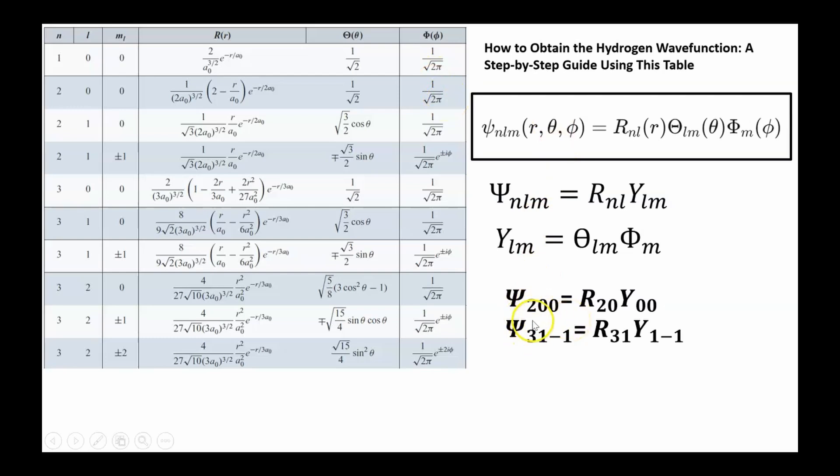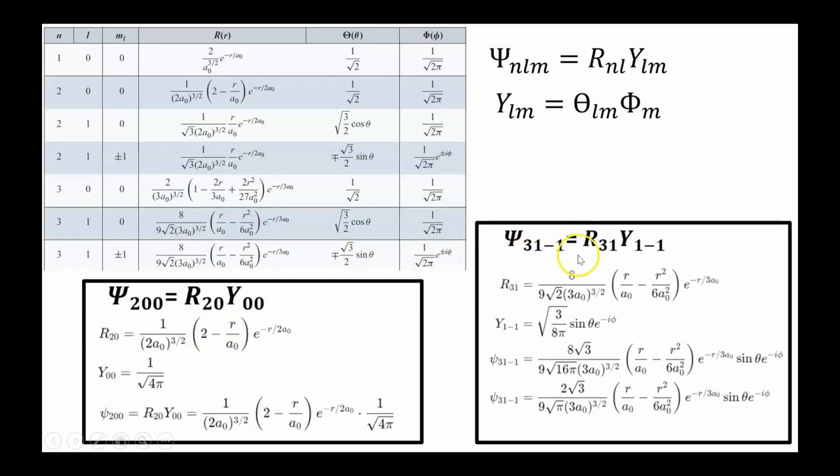You may want to try psi of three one minus one. Can you write down this wave function? I'm going to show you what it is on the next slide. Are you ready for it? Psi of three one minus one is r of three one times y of one minus one, where y lm are the spherical harmonics. So first I need r of three one, which is this equation, and then I need the spherical harmonic corresponding to one minus one, and that's going to be this function multiplied by this function, where we're going to the minus one is on bottom, so it's plus here and minus in the exponent, and then you take this and you multiply by that, and that gives you the wave function psi of three one minus one.